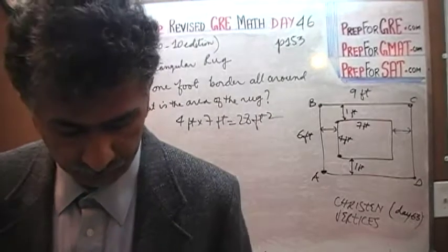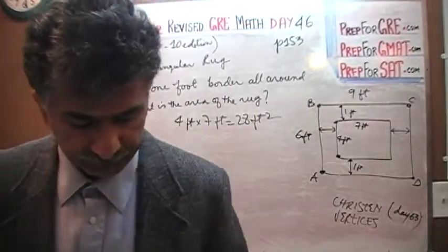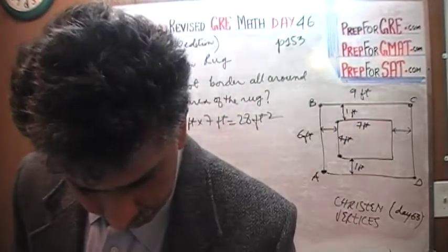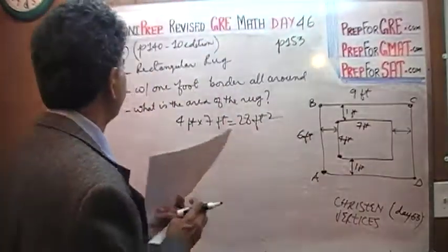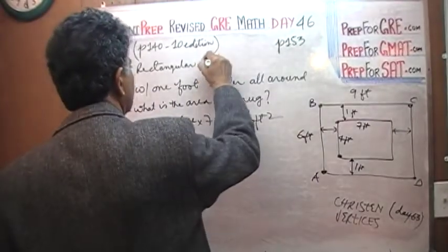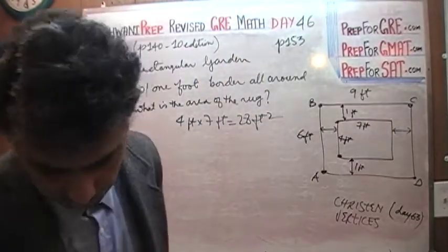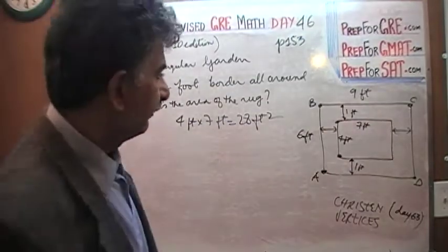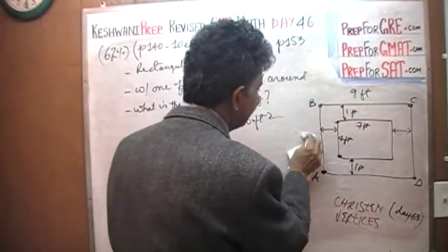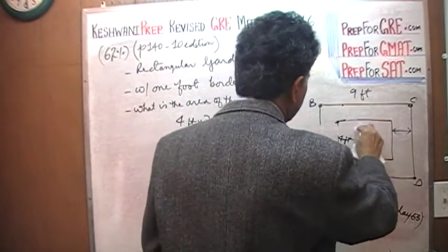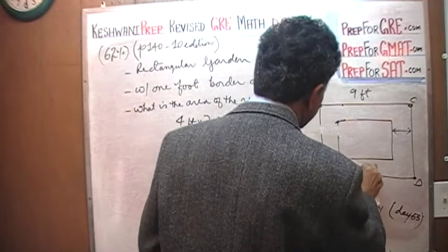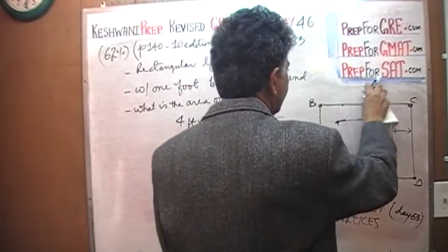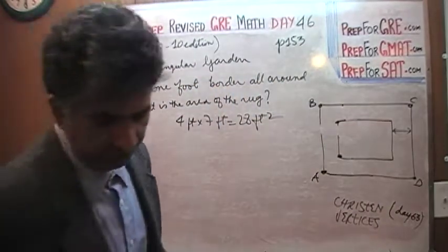Now let's do the problem in your book on page 153 — a very similar question but considered medium difficulty. It says the picture represents a rectangular garden — instead of a rug, we have a garden — with a walkway all around it. The garden is 18 feet by 12 feet. Pay attention: we are given the dimensions of the garden itself, not the outside part.